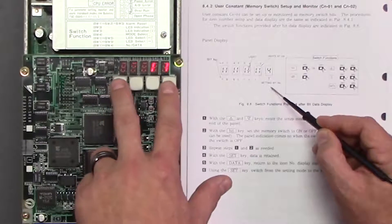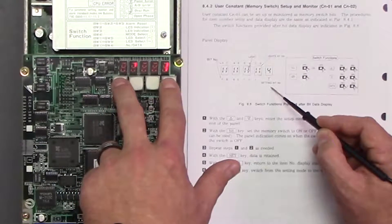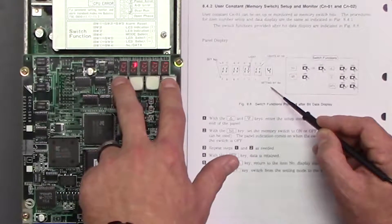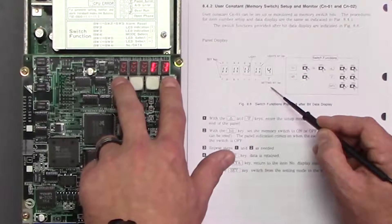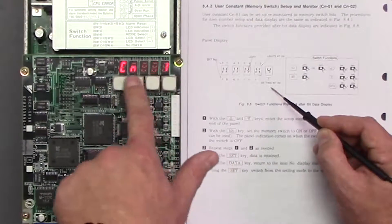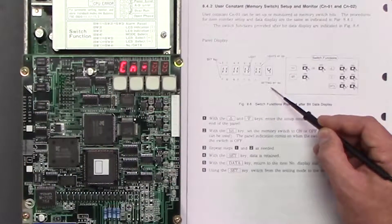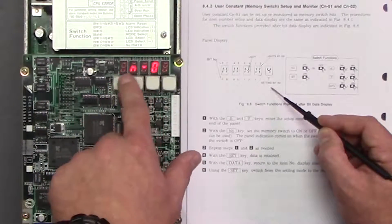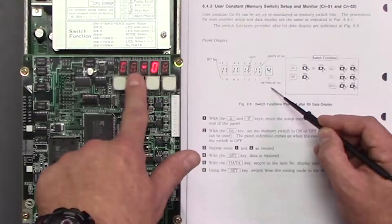And at any time if you press 1 and 4 you're going to save the changes that you made and then press it again 1 and 4 and you're going to get back into CN. Now let's go ahead and go up to CN11.